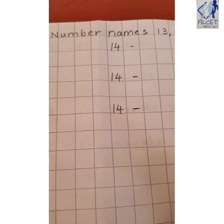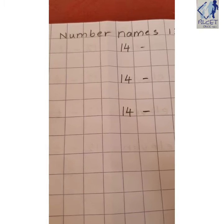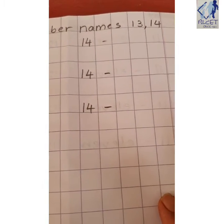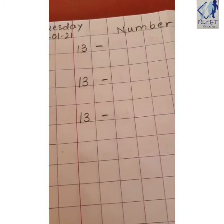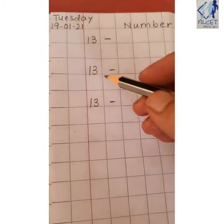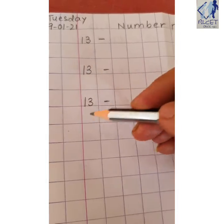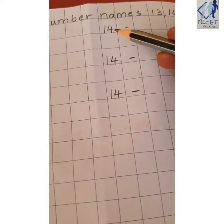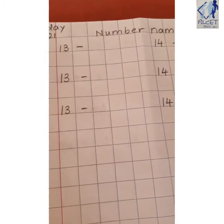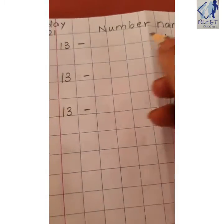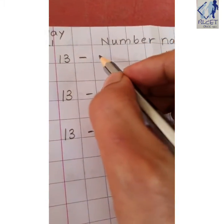Now what we have to do? We have to write number names 13 and 14. Okay, so madam has written the numbers 13 and the numbers 14. Right? So two numbers madam has written. Now, let us write the number name for the number.